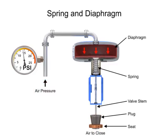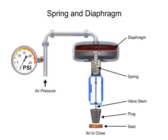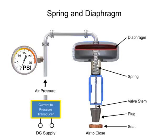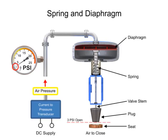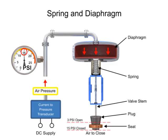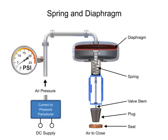With no air pressure, the restrictor is pushed upward by the spring to act as a normally open control valve. To vary the position of the restrictor and flow through the valve, a current to pressure transducer can be used to provide a 3 to 15 PSI signal to the diaphragm. At 3 PSI the valve is maintained open, and at 15 PSI the valve is maintained closed. Pressures between the 3 to 15 PSI range proportionally change the flow of the valve.